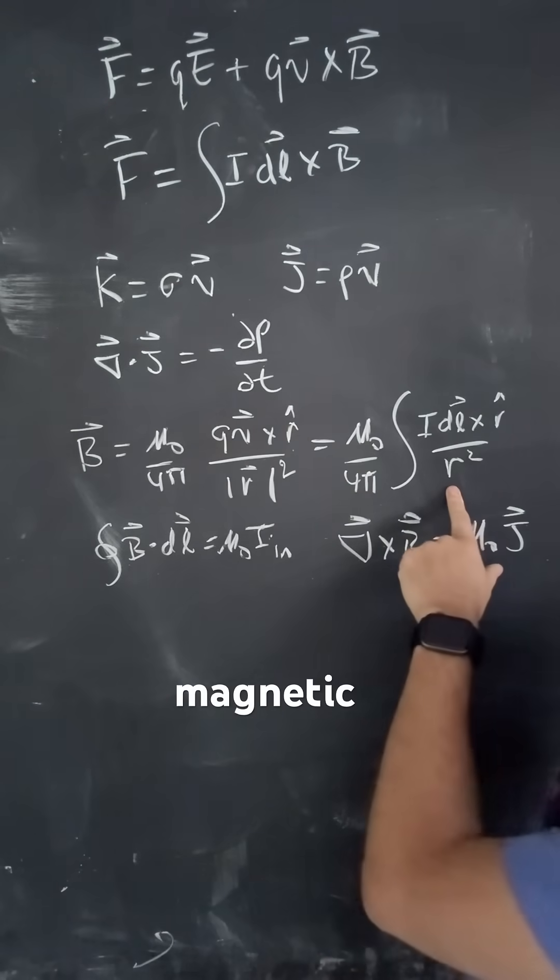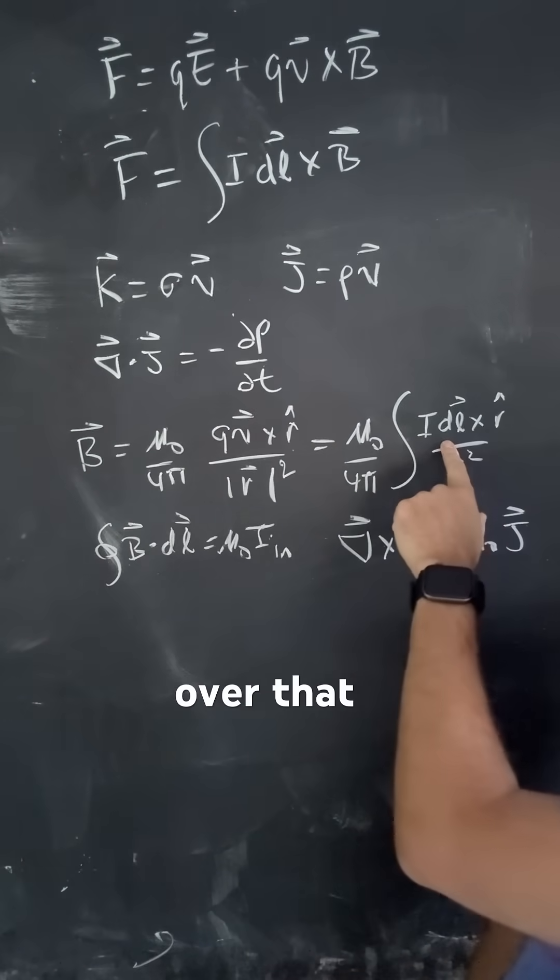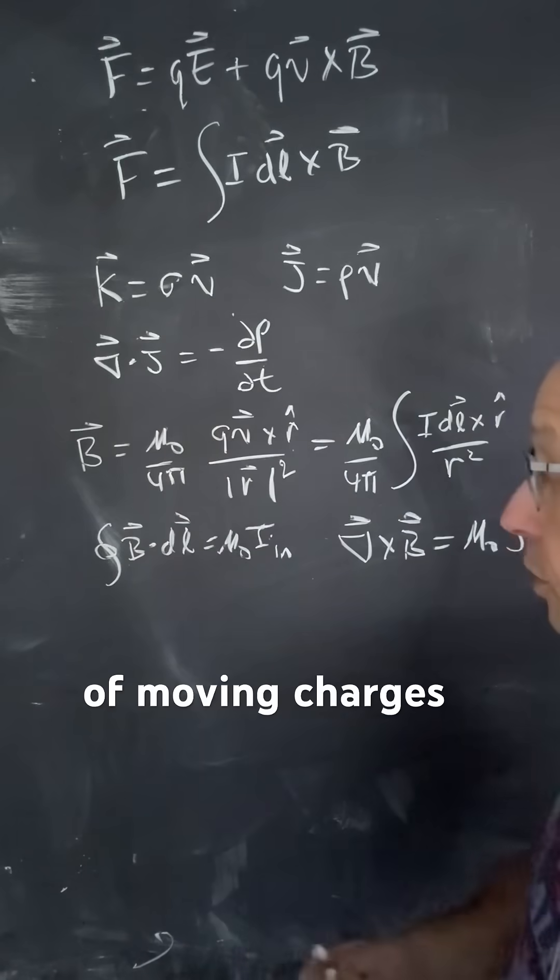If you have a magnetic current, you can find the magnetic field. But again, you're going to have to integrate over that whole current because we have a whole bunch of moving charges right there.